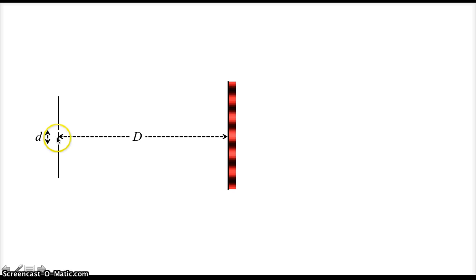This distance from the slits to the screen is called big D. This distance between the two slits is called little d. This distance from the central bright spot to this first fringe is called S, and it's also called the location of that first fringe. Now, there's some terminology that we have to learn.